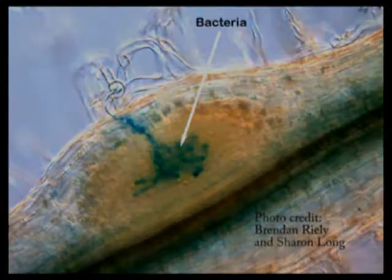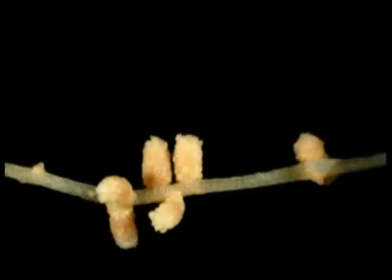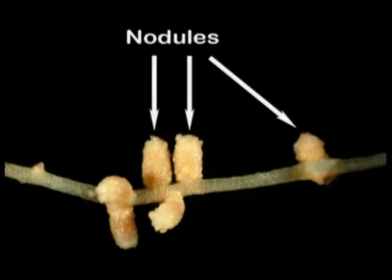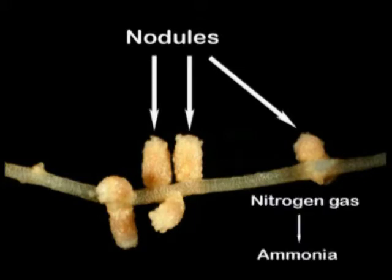Within fully formed root nodules, bacteria carry out a process known as nitrogen fixation. Nitrogen fixation is important for soil fertility because it converts diatomic nitrogen gas, which is inert, into ammonia, a form that plants can use as a nutrient.